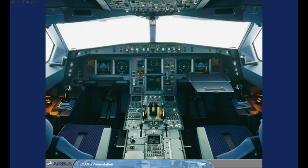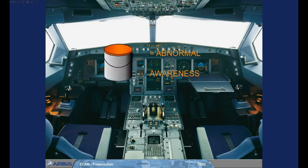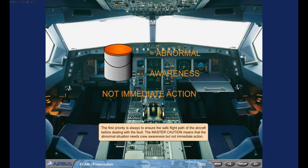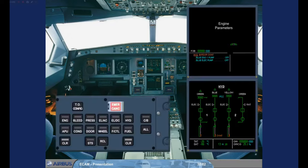The first priority is always to ensure the safe flight path of the aircraft before dealing with the fault. The master caution means that the abnormal situation needs crew awareness but not immediate action. The indications are: a failure message on the Engine Warning Display, the system synoptic associated with the fault is automatically displayed on the System Display, and the CLR keys on the ECAM control panel light up.